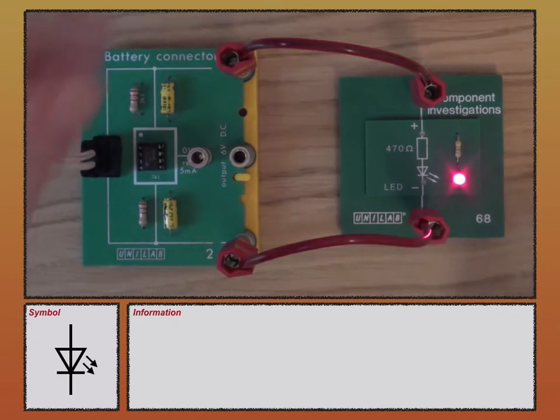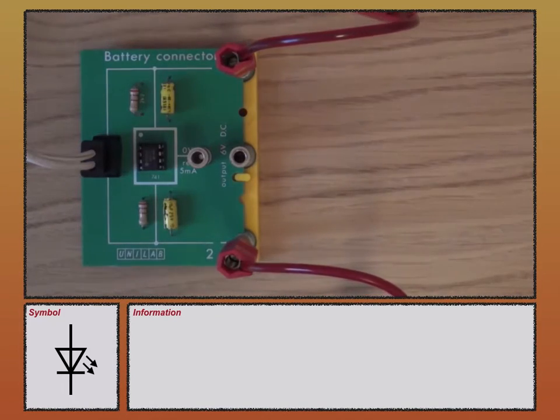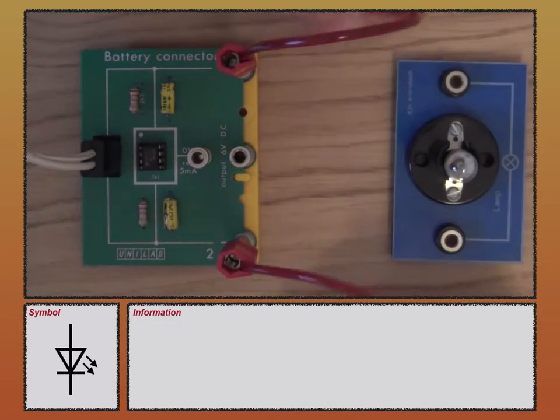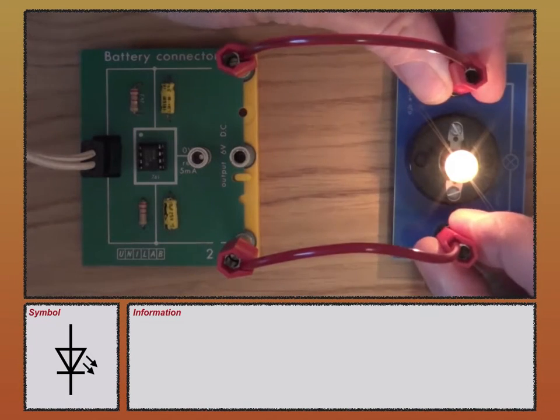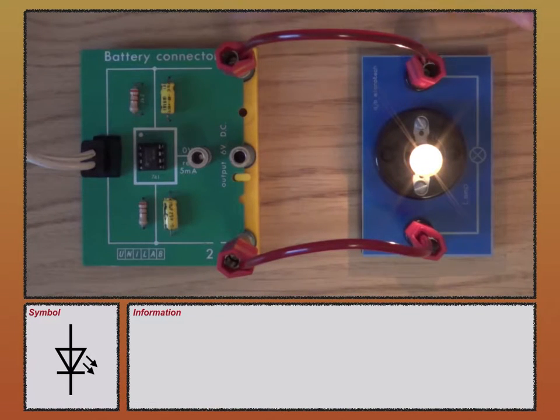Before I actually talk about the operation of the LED, I'm going to take it out of the circuit and talk a little bit about this component, the lamp. It's a filament lamp and this end here is connected to the positive terminal of my battery connector, negative terminal connected to this end and the electrical energy is being converted to light and heat.